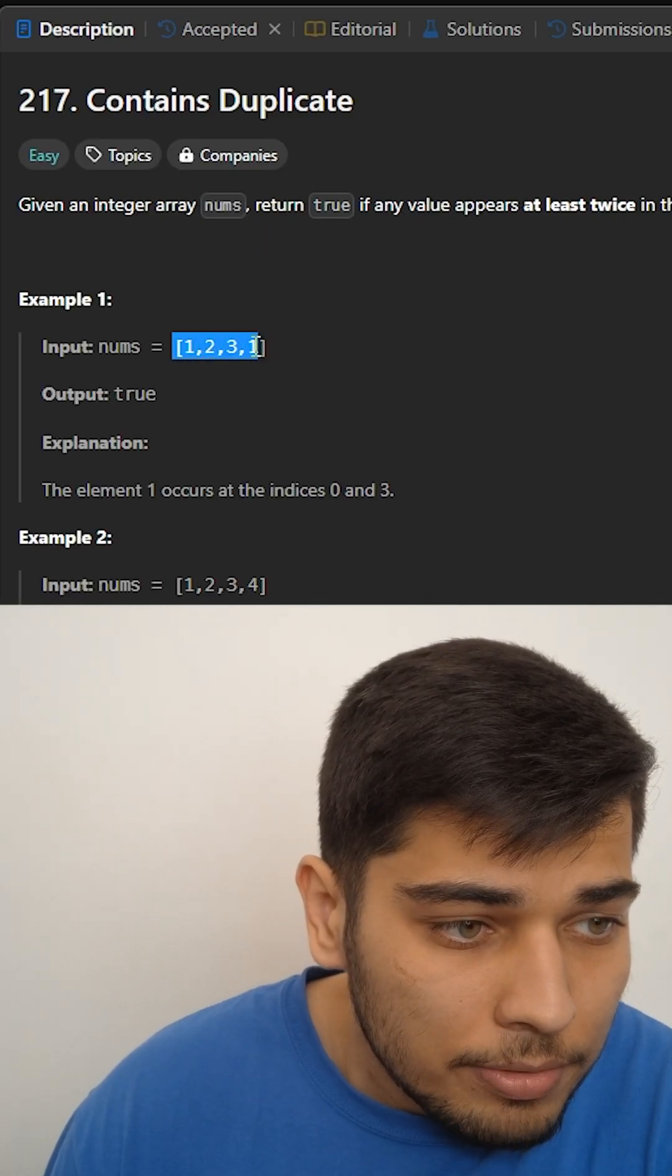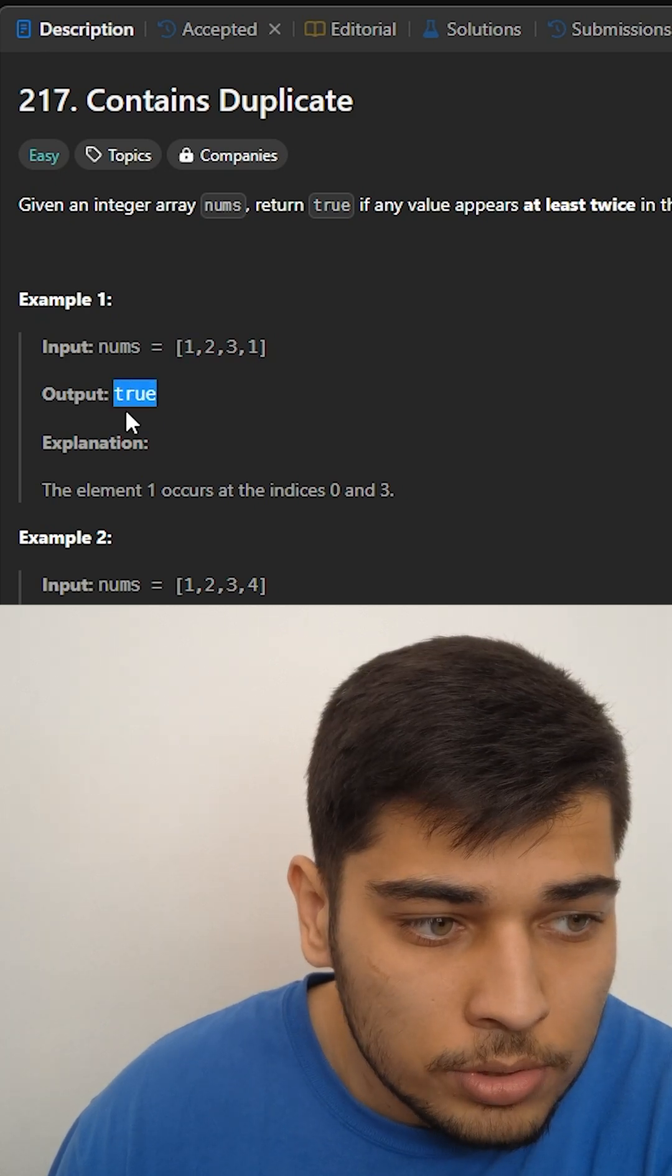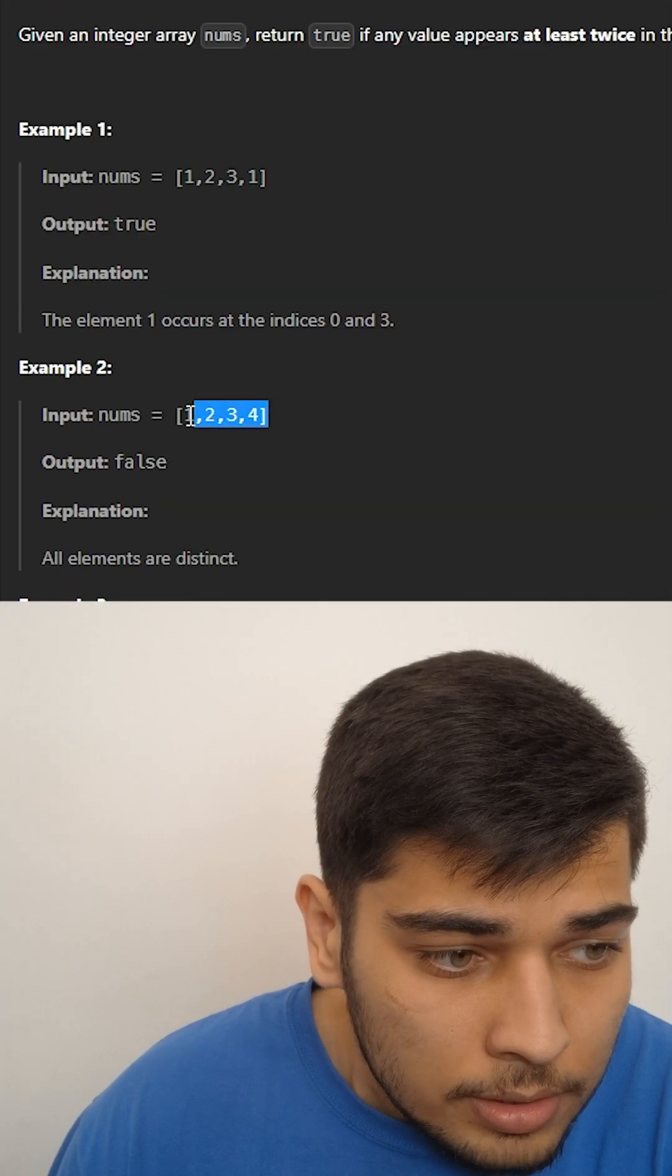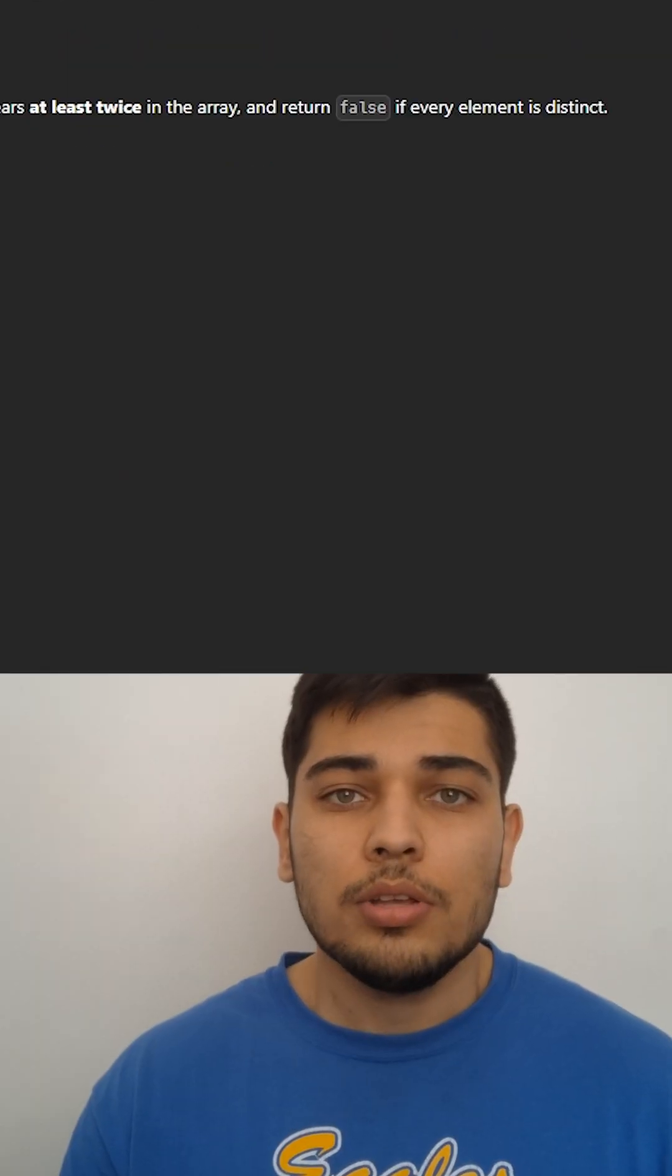For example, here we have a list that has 1 appeared twice in it, so we're going to return true. And in the second example, each element appeared once so we're going to return false.